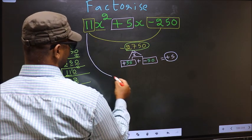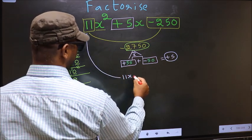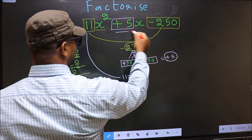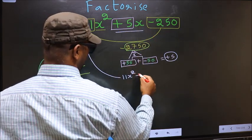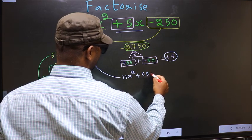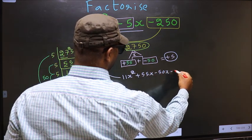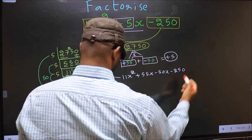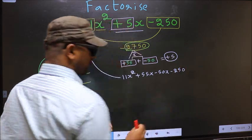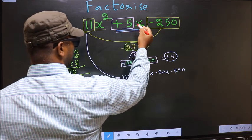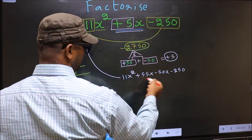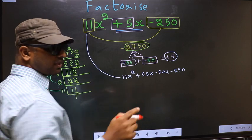Now you should change this to 11x². In place of +5x now we should write this +55x - 50x - 250. Did you understand? In place of +5x we have written this.